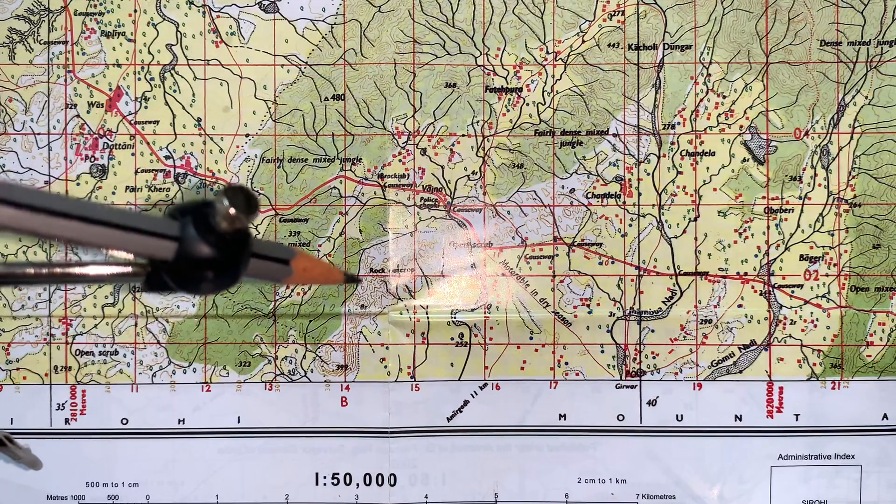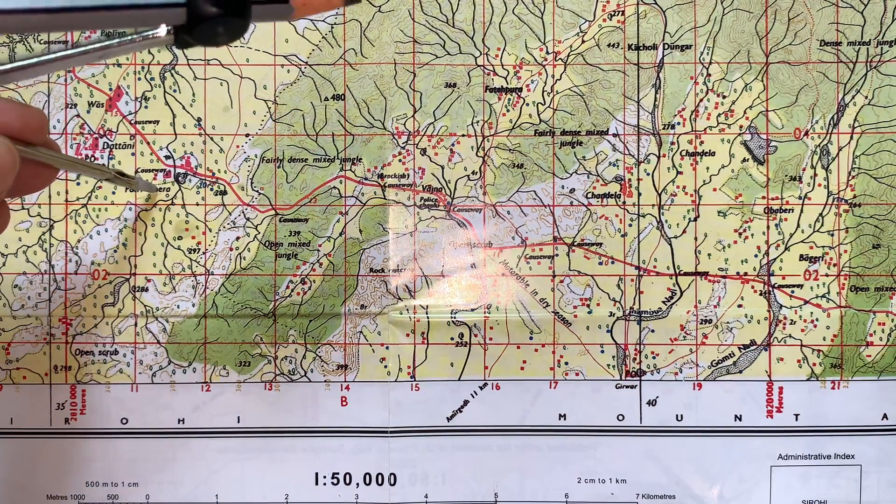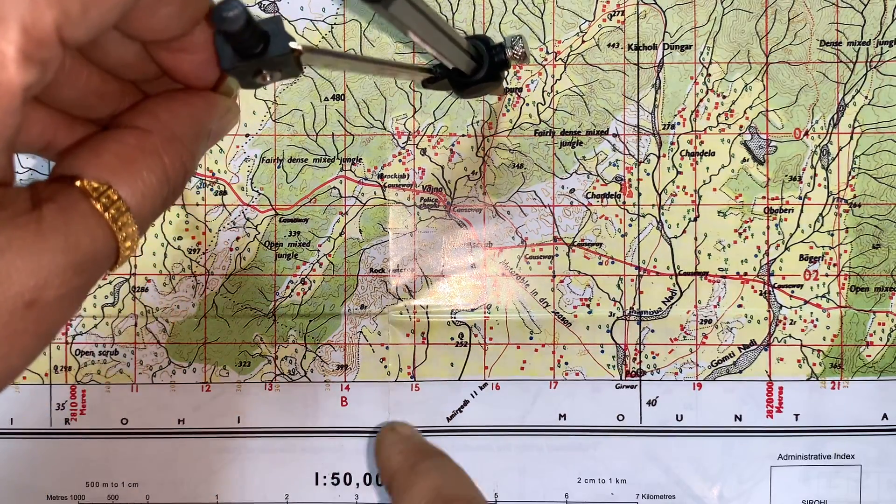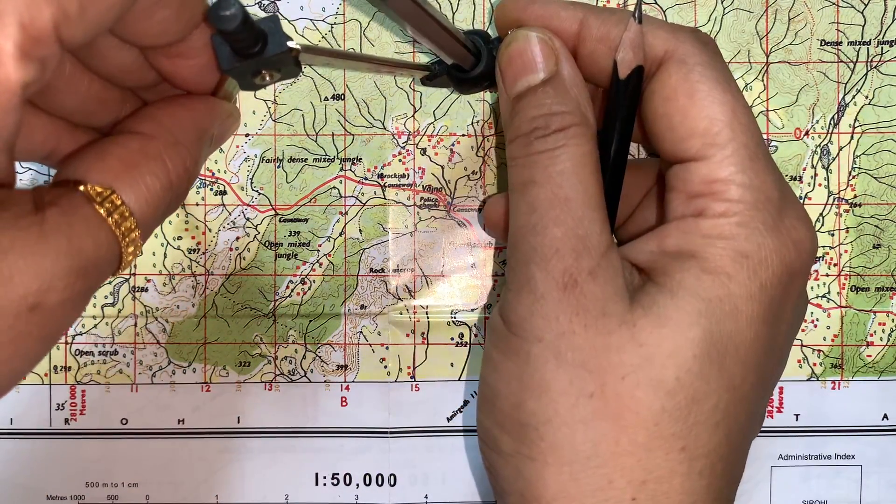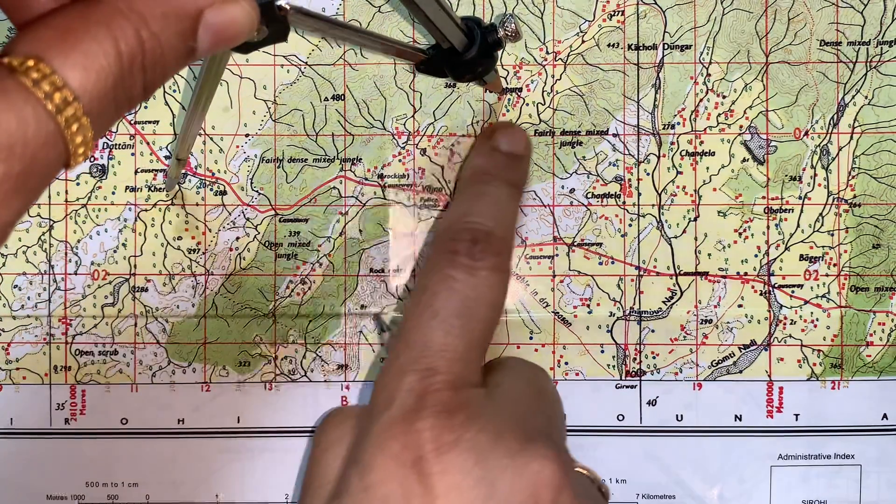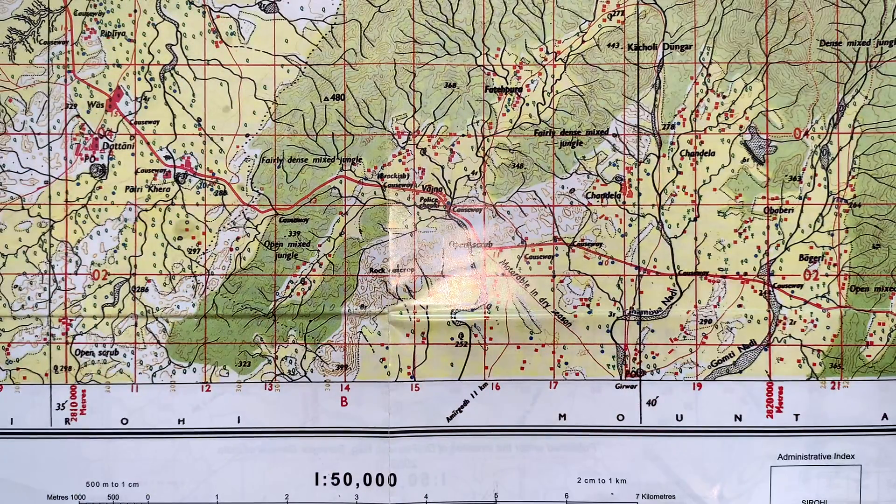So when you are using divider, or when we are using this compass for me as a divider, now the two legs of this are placed on these two points. One I have put it on Parikhera, another one I have put it here on Fatehpura like this. I will show you, is this clear to all of you?